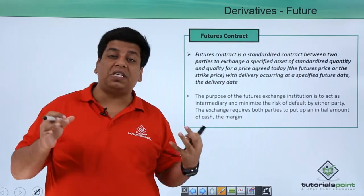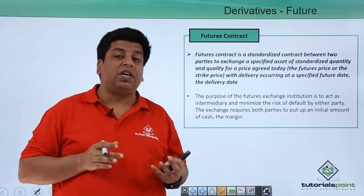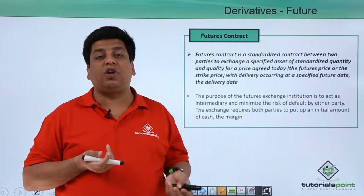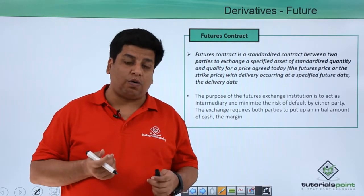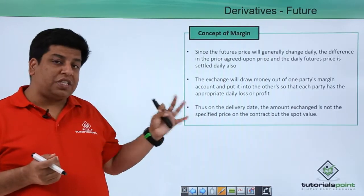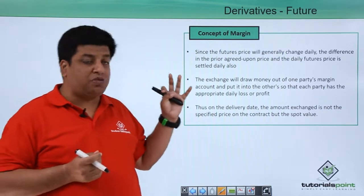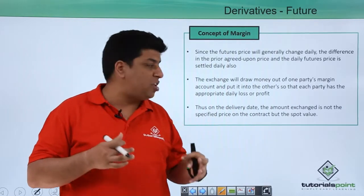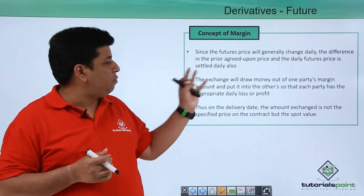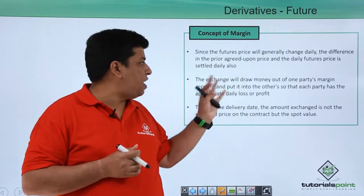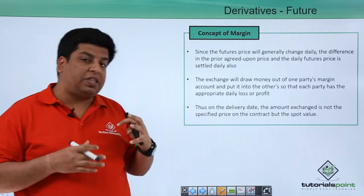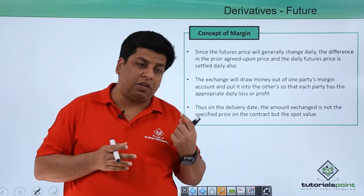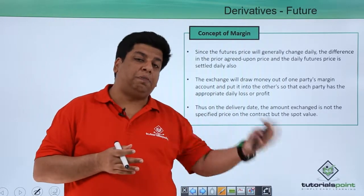Both the buyer and the seller need to keep a certain amount of money with the exchange, and this helps to do the settlement on a daily basis. The concept of margin works as follows: future prices are generally fixed at a pre-agreed level, but market prices change daily. Whatever the daily difference is between the current future contract price and the pre-agreed price, those differences are settled on a daily basis.